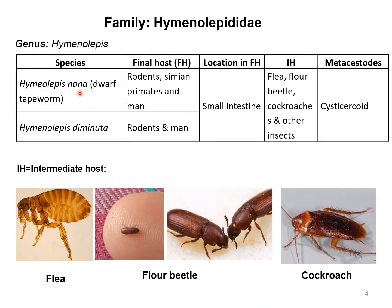Hymenolepis nana is also known as dwarf tapeworm and is located in the small intestine of rodents, simian primates, and men. Hymenolepis diminuta is also found in the small intestine of rodents and men. The intermediate hosts for these two parasites are fleas, flour beetles, cockroaches, and different other insects. The metacestode for both parasites is the cysticercoid.